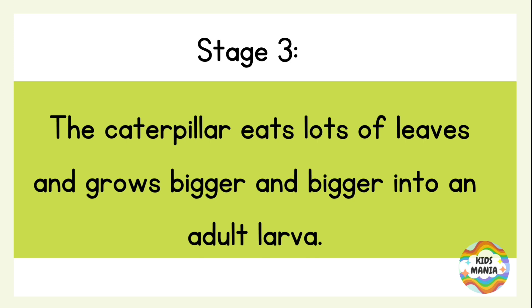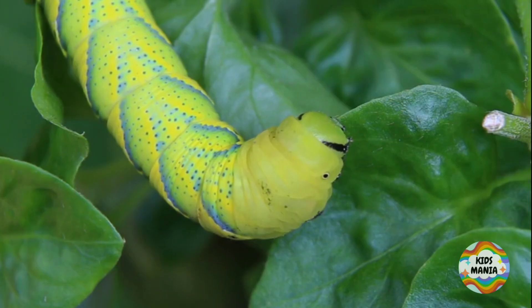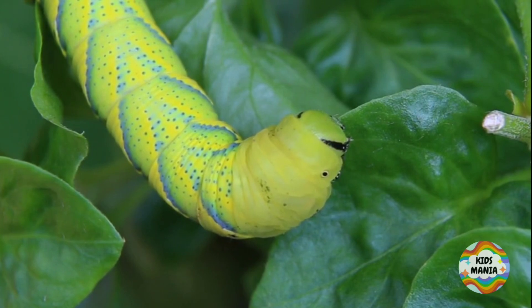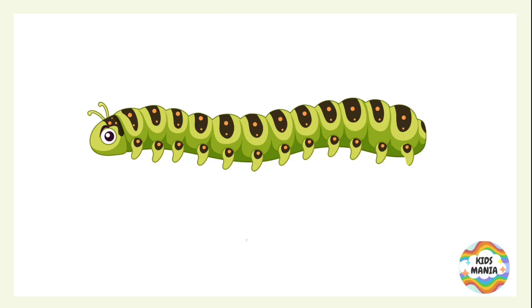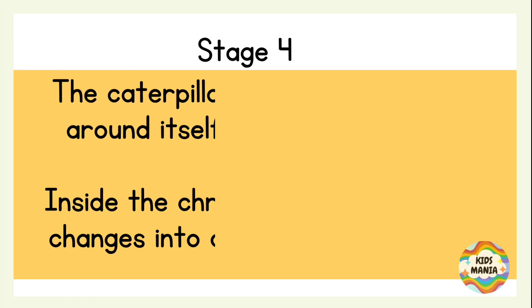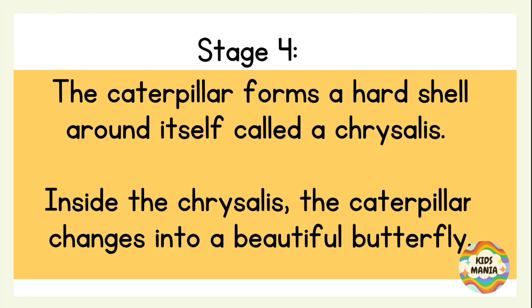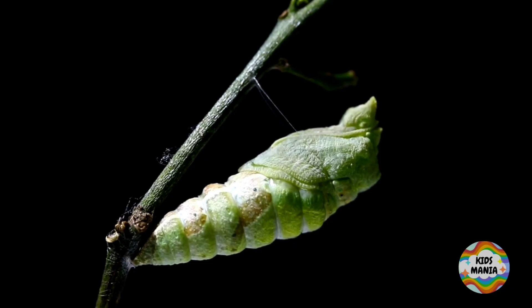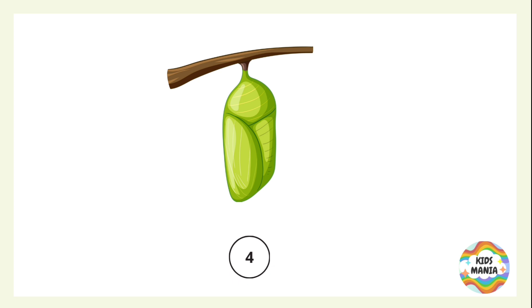Stage three: the caterpillar eats lots and lots of leaves and grows bigger and bigger into an adult larva. This is an adult larva. Stage four: the caterpillar forms a hard shell around itself, called a chrysalis. Inside this chrysalis, the caterpillar changes into a beautiful butterfly.